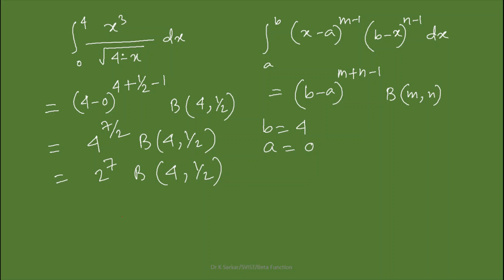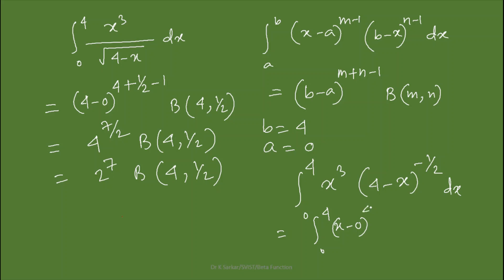To understand this more clearly: the integral from 0 to 4 of x³ · (4 − x)^(−1/2) dx can be rewritten as integral from 0 to 4 of (x − 0)^(4−1) · (4 − x)^(1/2 − 1) dx. Here m = 4 and n = 1/2. You can now apply the formula and the rest of the simplification follows as before.